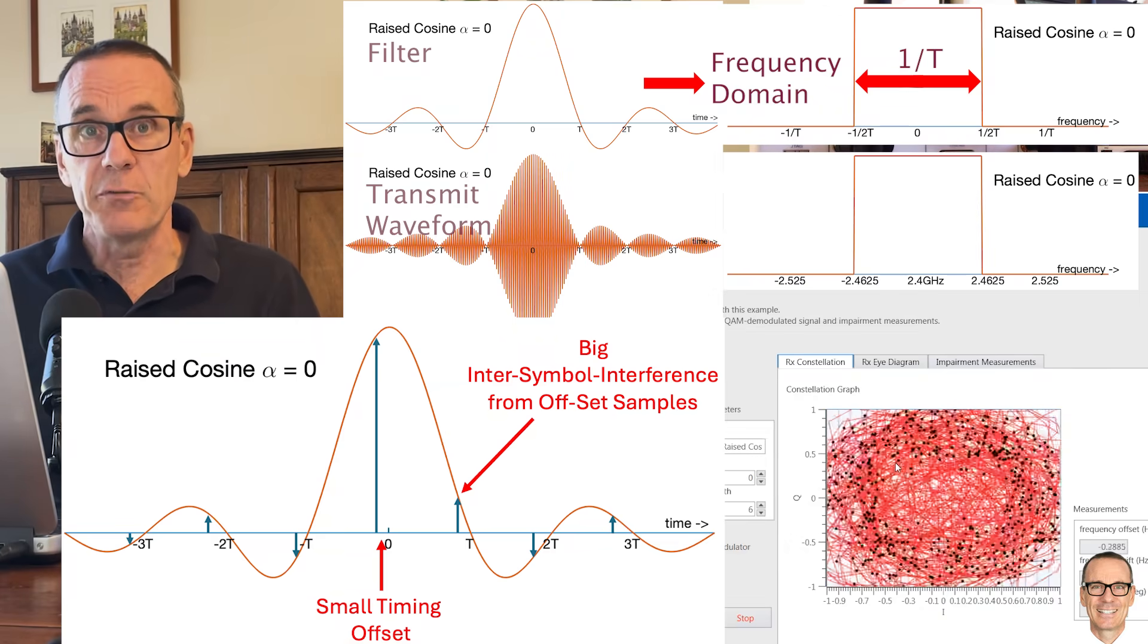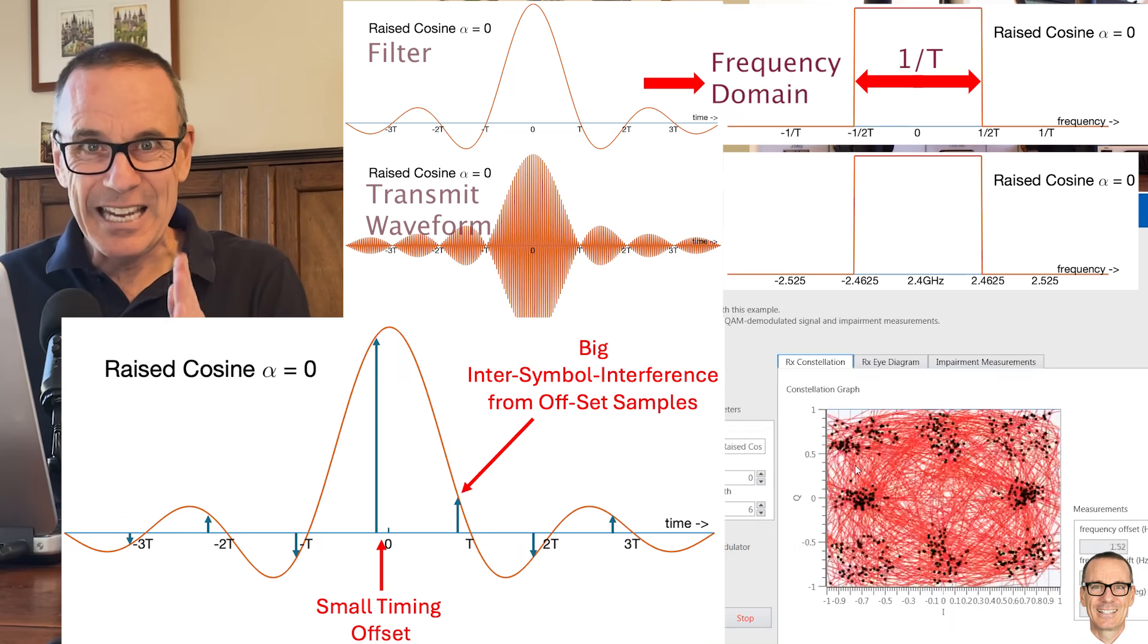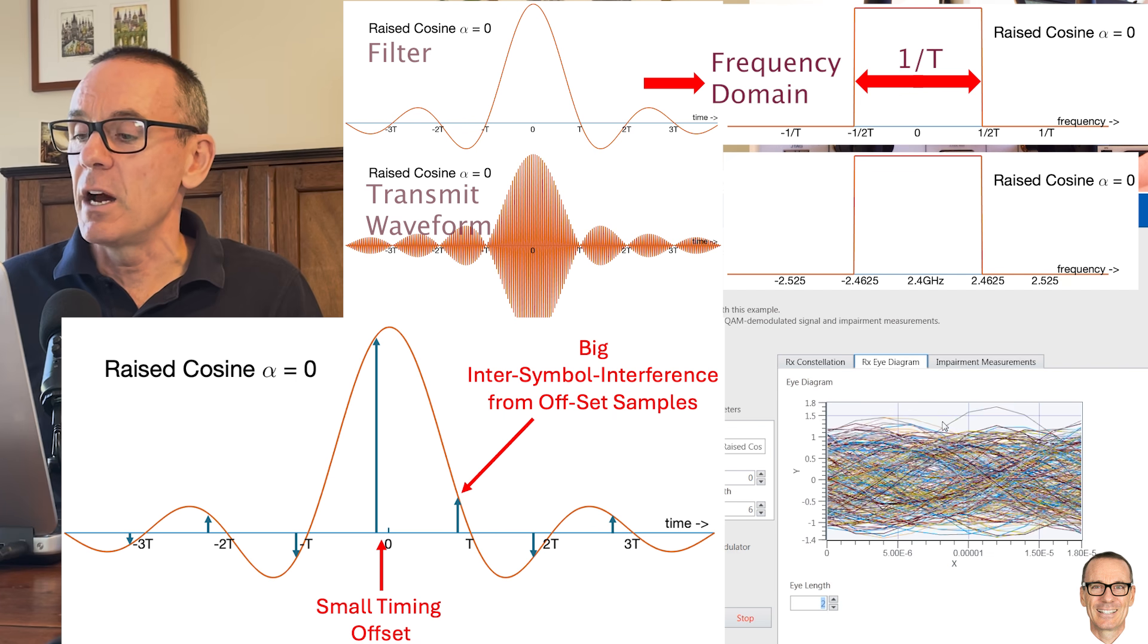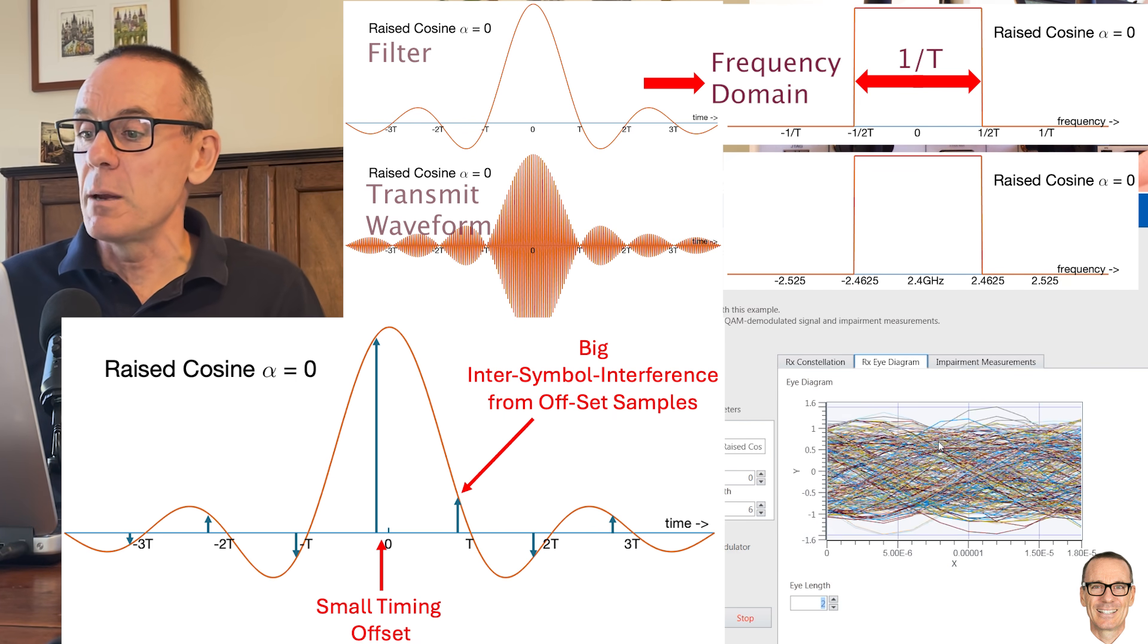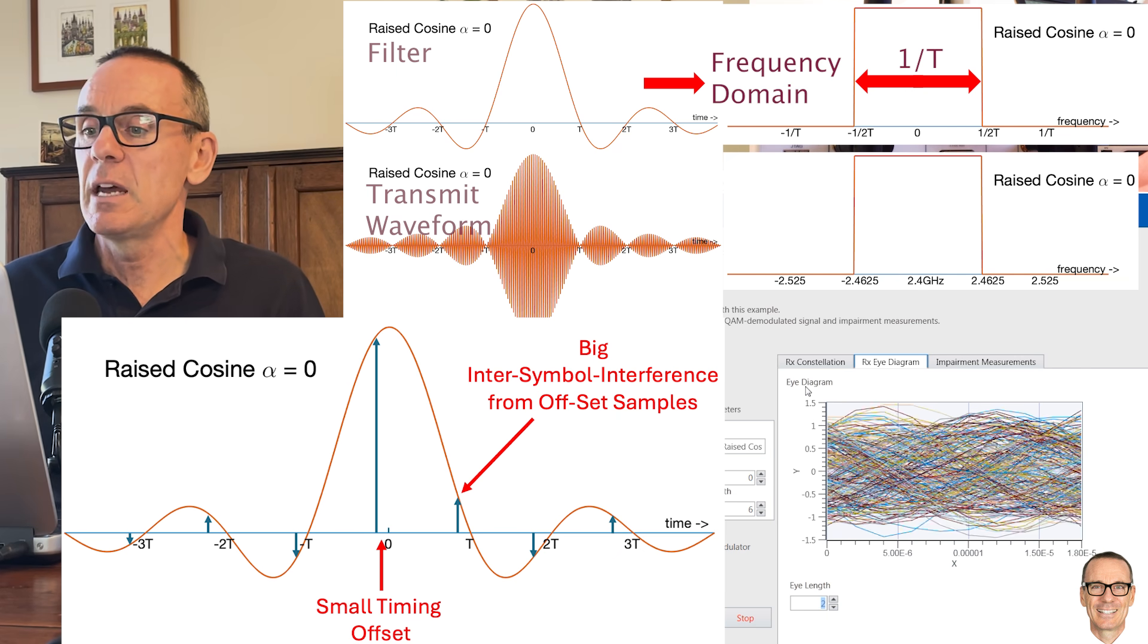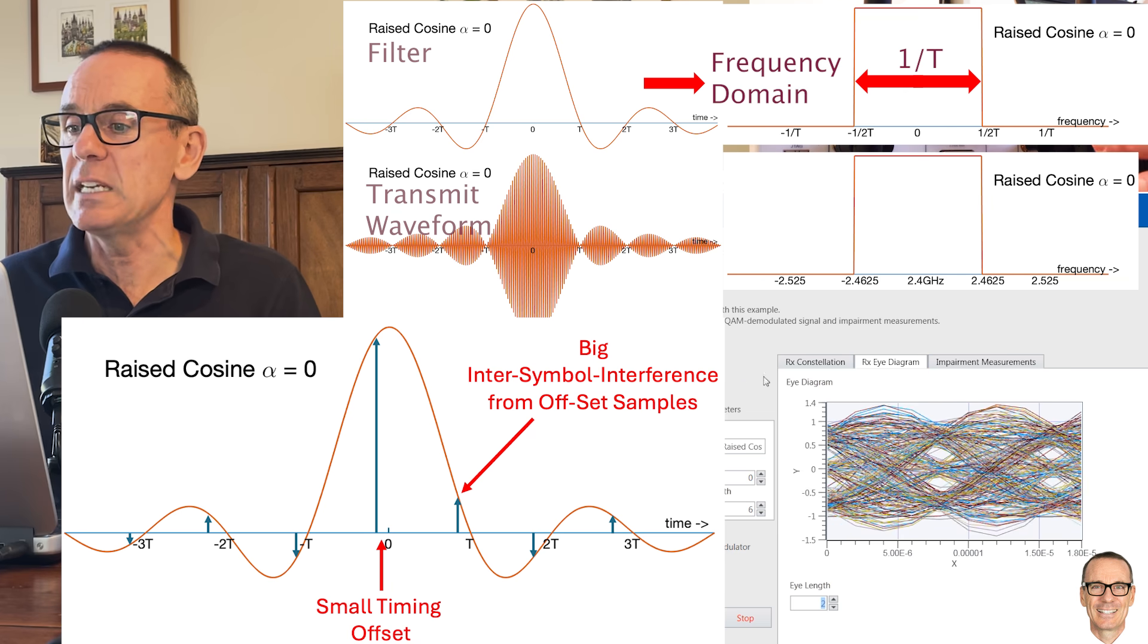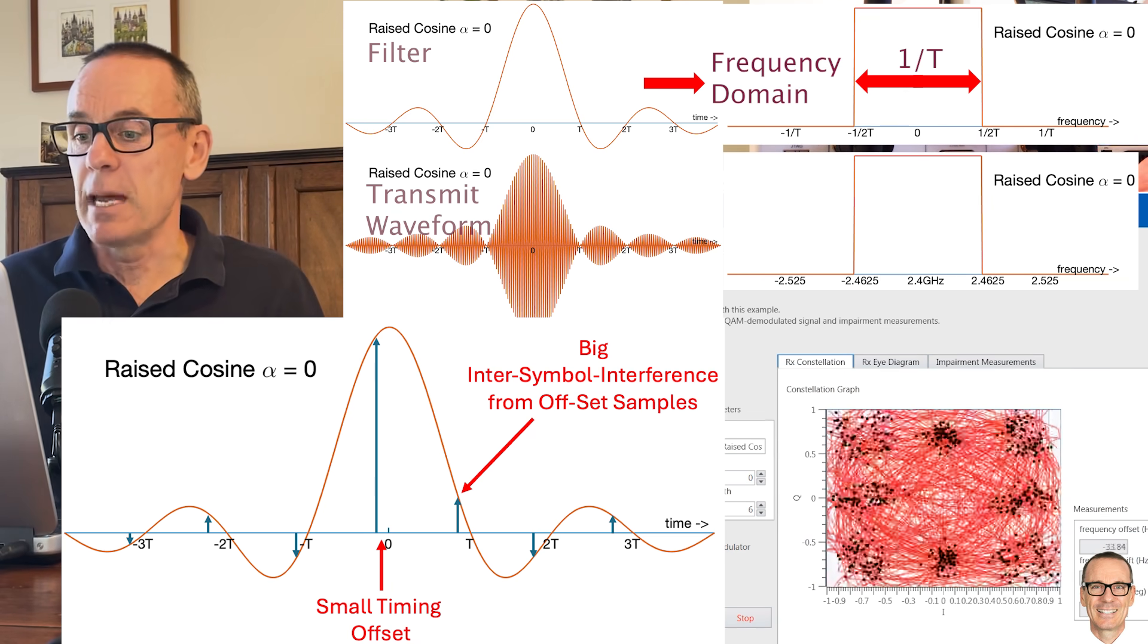The electronics in the software defined radio are having a really difficult time exactly sampling at the right time and if we look in the eye diagram here then the eye diagram is only slightly open at certain times but mostly closed. So we'd be making lots of errors with this pulse shape filter. So if we try to go for the extreme of compressing exactly within one on t bandwidth we're going to have a lot of errors happening.